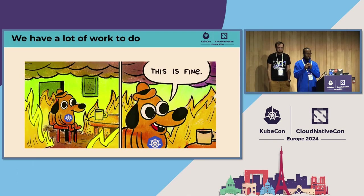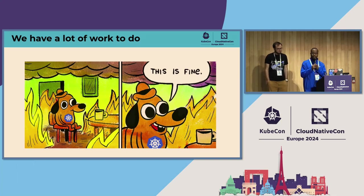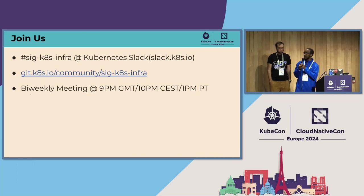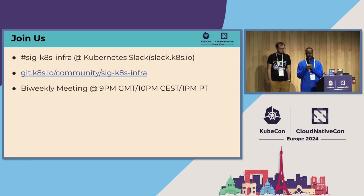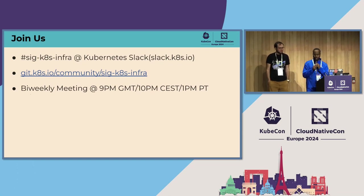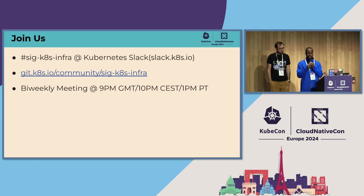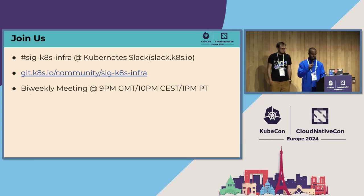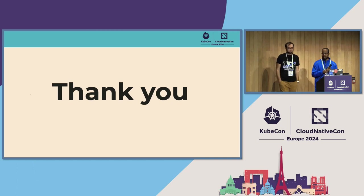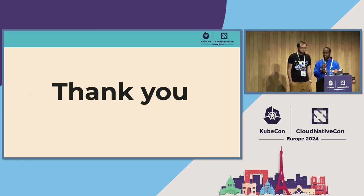We have a lot of work to do — many things on fire, and we need people to help. If you're not in the community Slack, go to slack.k8s.io to join. We're in the SIG Infra channel. We have a GitHub repository with our charter, projects, and systems we're responsible for, and a kubernetes/k8s.io repository with about 100 issues we need help with. We also meet every other Wednesday at 9pm London time / 1pm Pacific / 10pm in Europe.